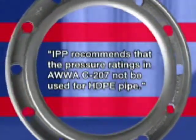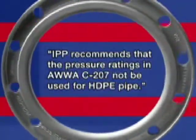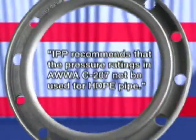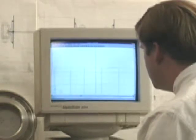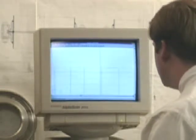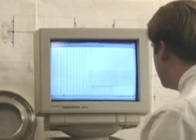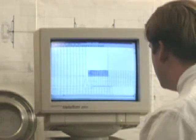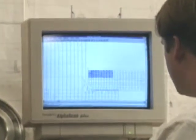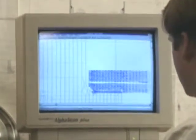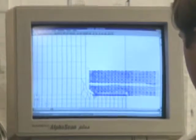IPP recommends that the pressure ratings in AWWA C207 not be used for HDPE pipe. IPP employs sophisticated engineering computer software in order to design its products. Finite element analysis is used to determine primary levels of hoop, axial, radial, shear, and von Mises stresses. This design tool is recognized for accurate stress analysis and allows for results that are verifiable and reproducible. Finite element analysis represents the ultimate in structural analysis for the most sophisticated systems to ensure long life and safe operation.